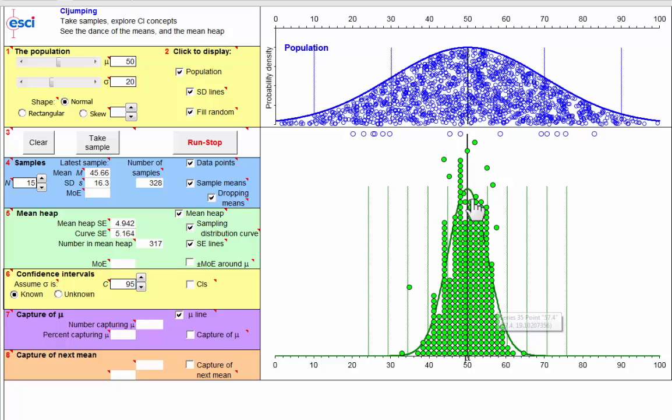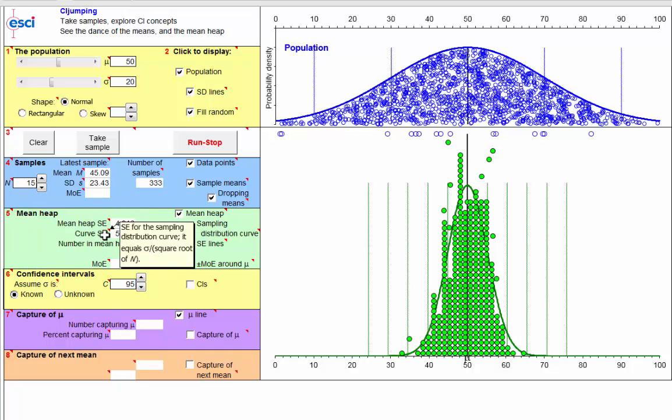And the formula for the standard error, well if you look around here for the pop-outs, how about this one? The standard error for the sampling distribution curve, it equals sigma, that's the population standard deviation, divided by the square root of n, the sample size.